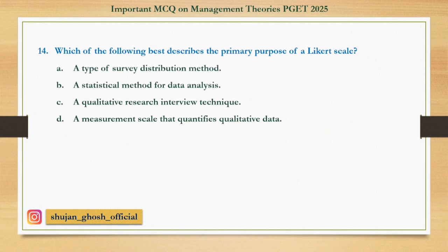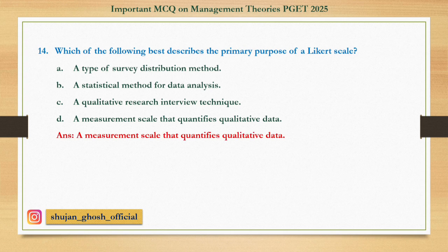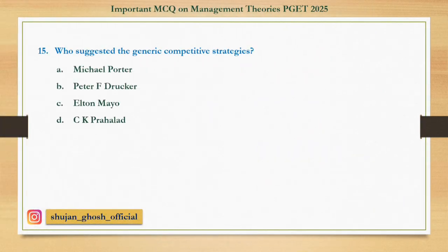Question number 14: Which of the following best describes the primary purpose of a Likert scale? Option A: A type of survey distribution method. B: A statistical method for data analysis. C: A qualitative research interview technique. D: A measurement scale that quantifies qualitative data. Answer is: A measurement scale that quantifies qualitative data. Question number 15: Who suggested the generic competitive strategies? Option A: Michael Porter. B: Peter F. Drucker. C: Elton Mayo. D: C.K. Prahalad. Answer is Michael Porter.